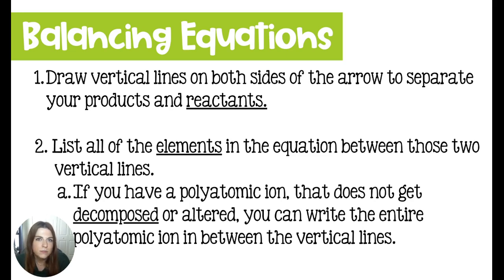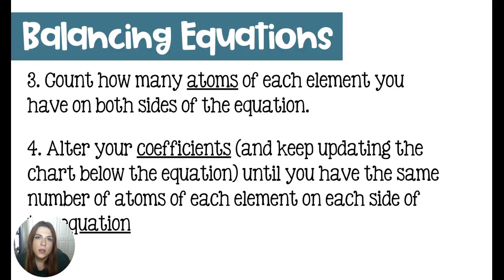An advanced tactic here is that if you have a polyatomic ion that is not decomposed in the process of your chemical reaction, you can hold that entire polyatomic ion together when you list all of your elements in between those vertical lines. We're going to look at the chemical reaction as a before and after, and count how many atoms we have on each side of the chemical equation, listing that on the sides of the vertical lines.